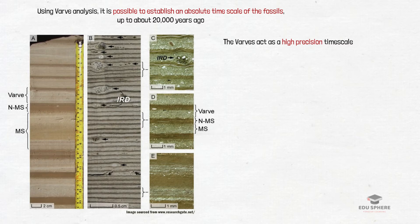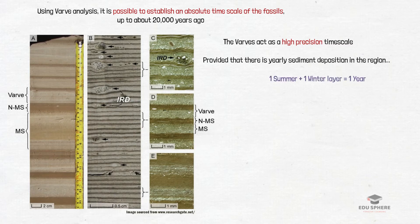The varve sequences are effective time stamps for a region given the fact that there is yearly deposition of varve layers. Therefore one summer or winter layer is equal to one year.